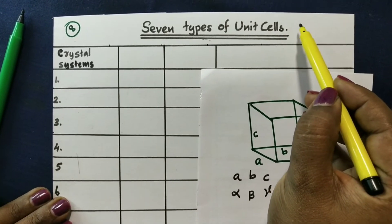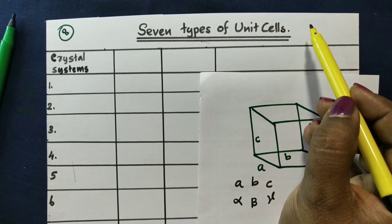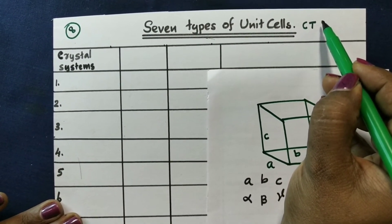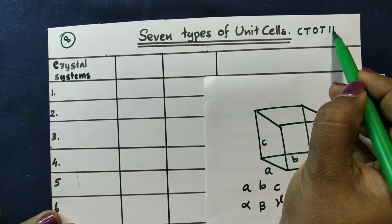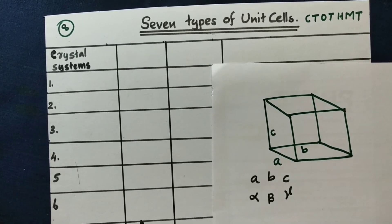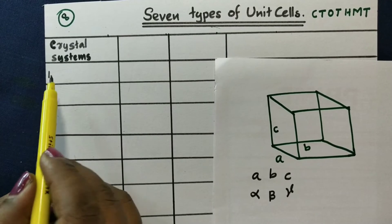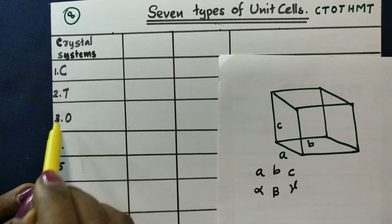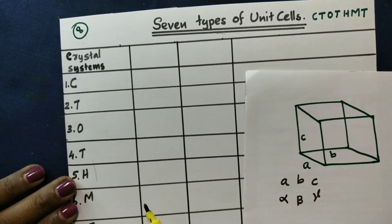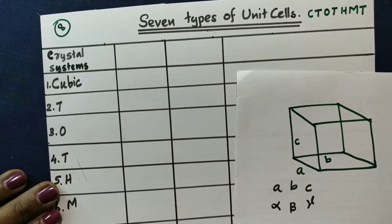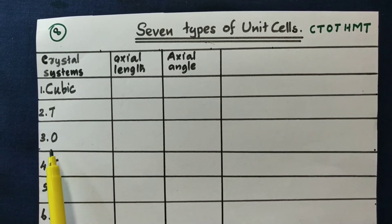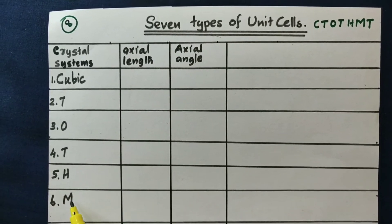The names are: Cubic, Tetragonal, Orthorhombic, Trigonal, Hexagonal, Monoclinic, Triclinic. We can use a trick: C T O T H M T — Ctothmt.